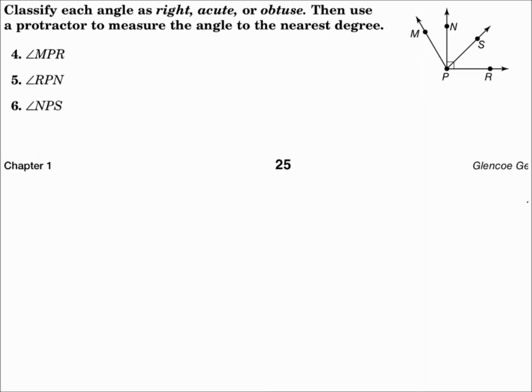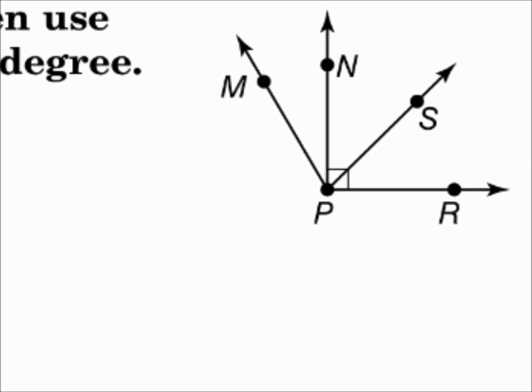Classify each angle as right, acute, or obtuse. Then use a protractor to measure the angle to the nearest degree. Number four, the measure of angle MPR. Angle MPR is obviously bigger than 90 degrees, so it's obtuse. If we took a protractor to measure it, the measure of angle MPR is 120 degrees.